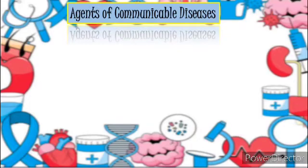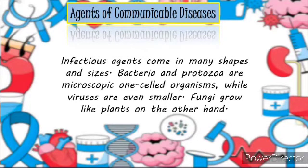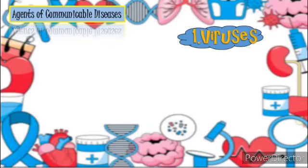Agents of communicable diseases. Infectious agents come in many shapes and sizes. Bacteria and protozoa are microscopic one-celled organisms, while viruses are even smaller. Fungi grow like plants, on the other hand. Anyone can get sick — young or adult. The challenge is how to keep yourself away from these disease agents. These are some of the agents of communicable diseases.